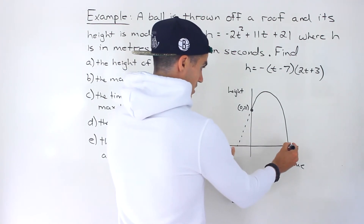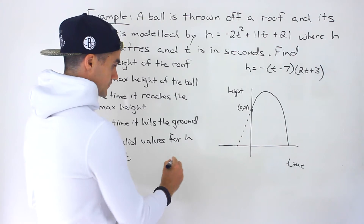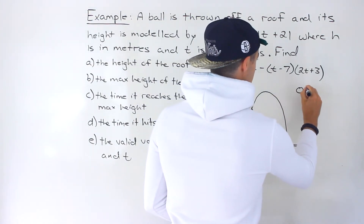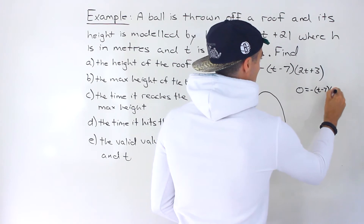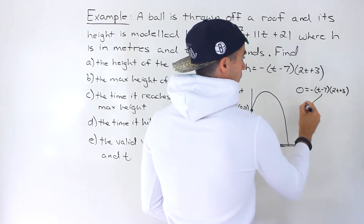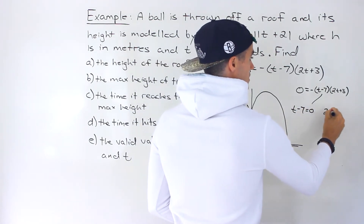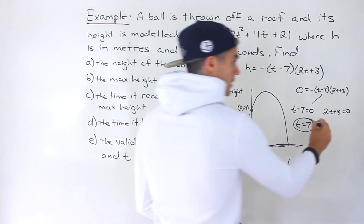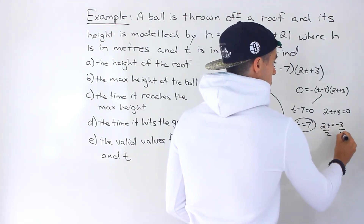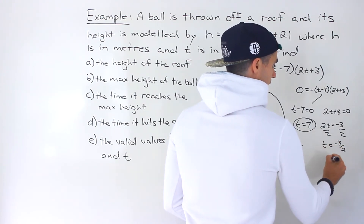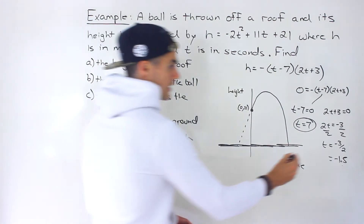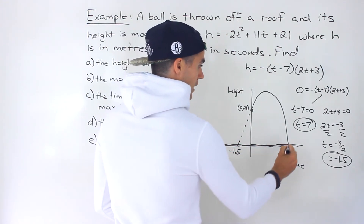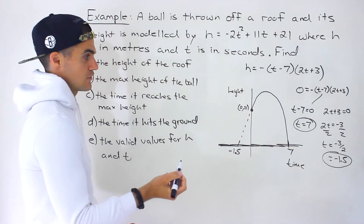We can find the two t-intercepts easily since we factored the expression. Setting h equal to zero, we ask when does t minus 7 equal zero and when does 2t plus 3 equal zero. The first gives t equals 7, and the second gives 2t equals negative 3, so t equals negative 3 over 2, or negative 1.5. So the two intercepts are at t equals negative 1.5 and t equals positive 7.